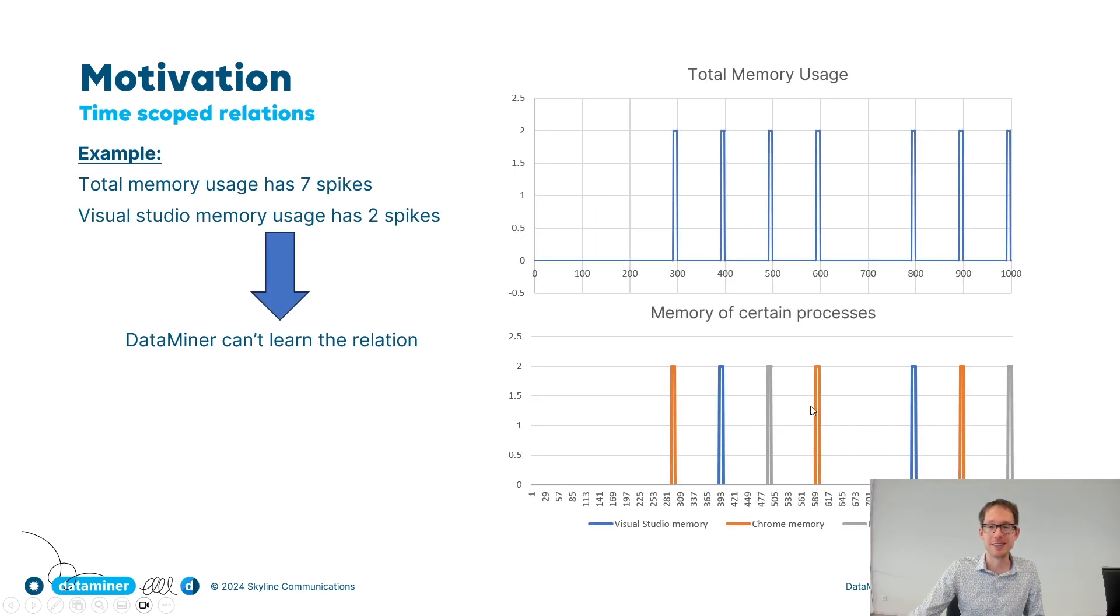A final example is this one. Again, clearly mocked data. Here we see the total memory usage on a server. And we assume that actually no memory is used except in seven cases. So there are these seven spikes up to two gigabytes. Now underneath this trend graph you see another picture which shows you the cause of these spikes. The first spike was apparently due to a spike in the Chrome memory, and the Chrome memory spiked three times.